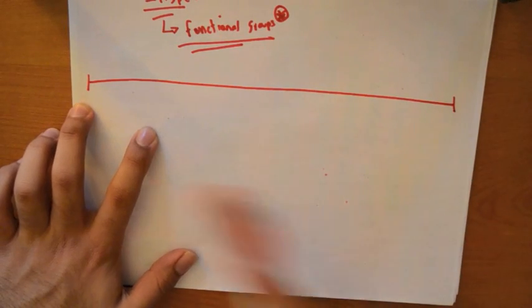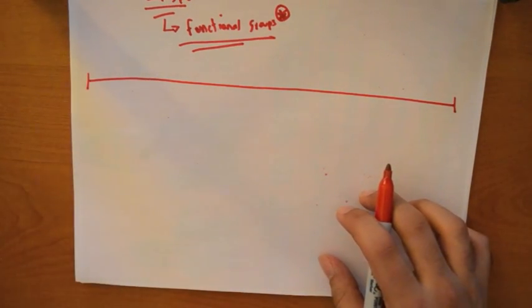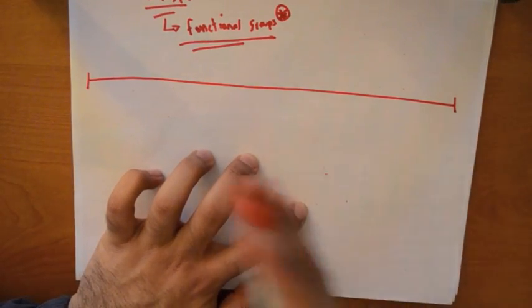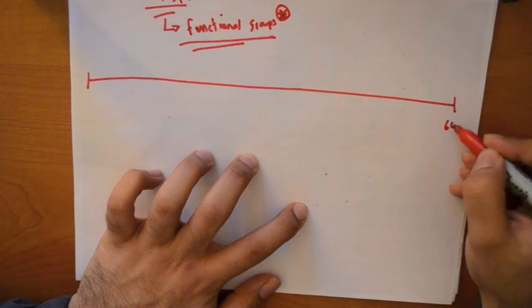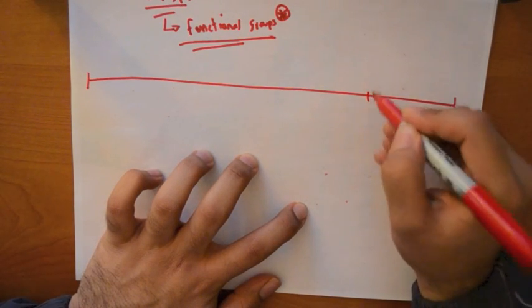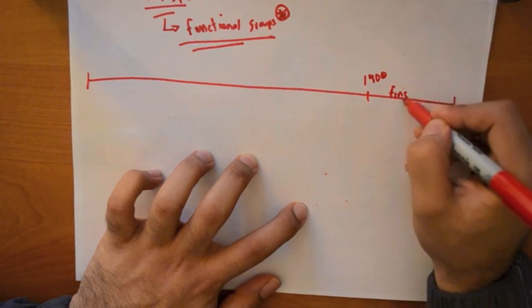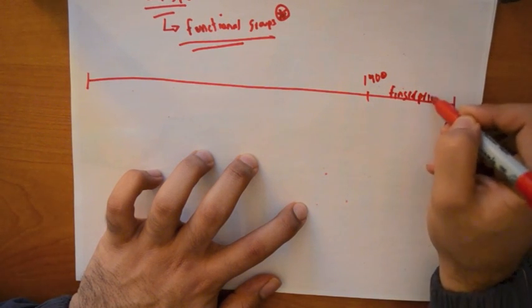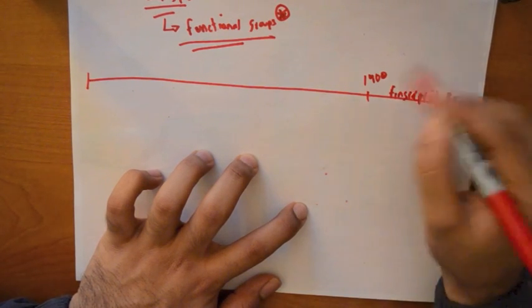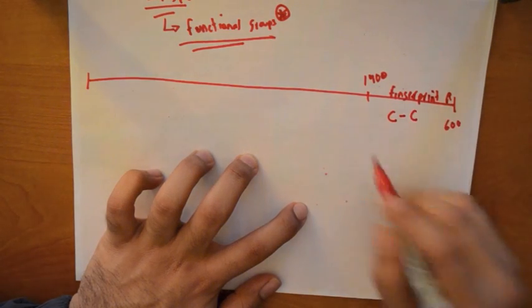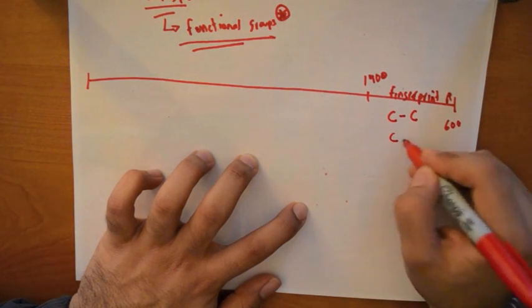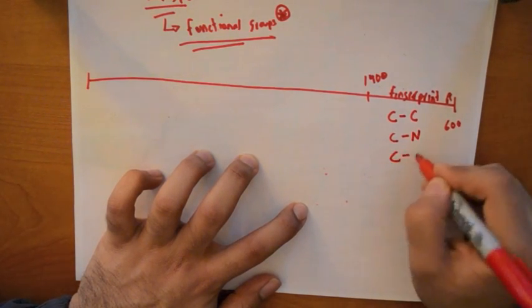So I want to do like a line diagram where I show you which region do what molecules belong on, what stretches are there. So let's say from 600 to 1400 is called the fingerprint region. And these structures from here are C single bond C, C single bond N, and C single bond O.